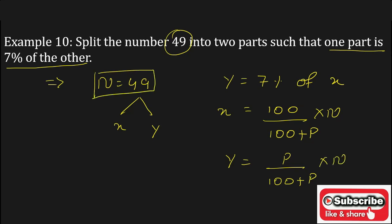As we know the value of n equals 49 and p is the given percentage that is 7%, so p equals 7. Now substitute these values in the formula to find the value of x and y.